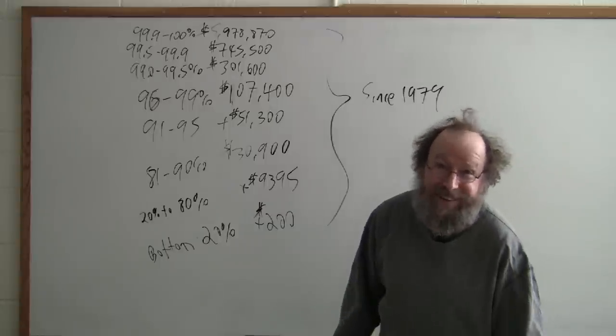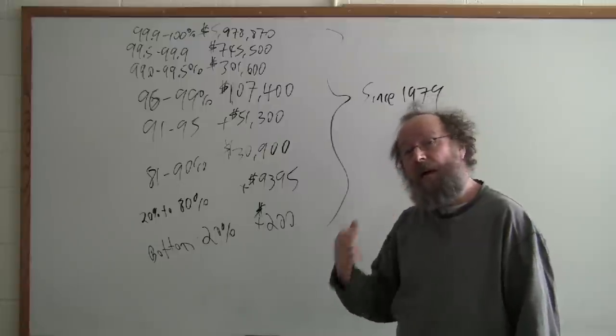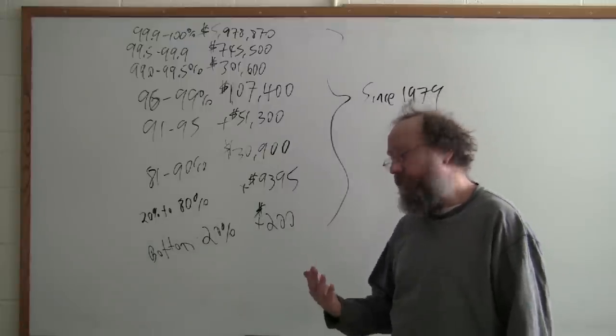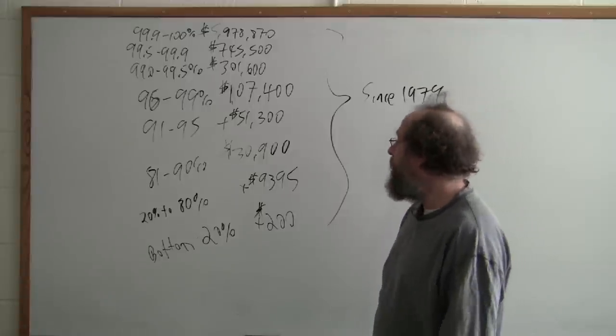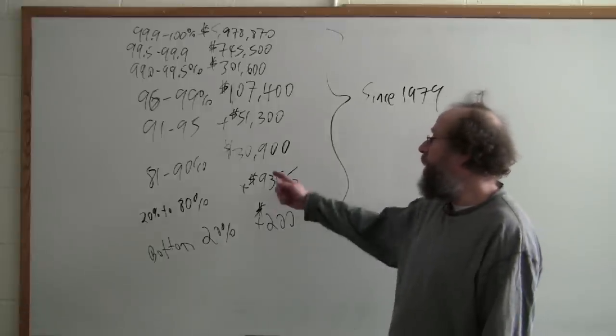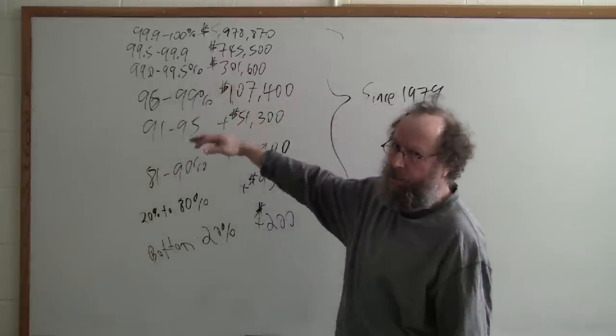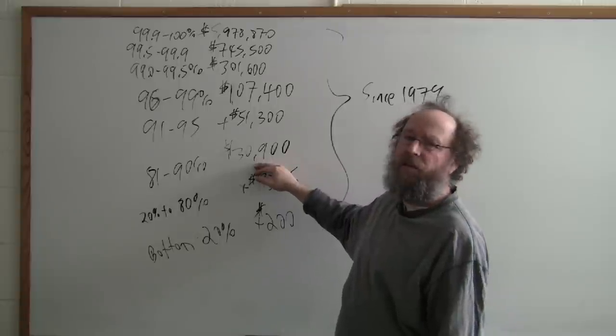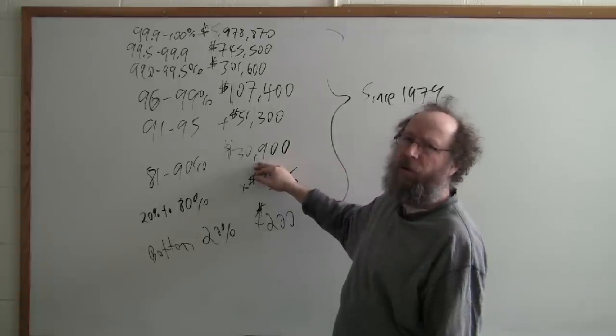At least it's positive. The next 60%, that's 180 million Americans, gained on average $9,395. It's something. Kind of enough to pay their increase in health insurance premiums. The next 10%, and now we're talking about the top 20% of the population. 30 million Americans are in households that gained $30,900. Almost enough to pay your tuition.